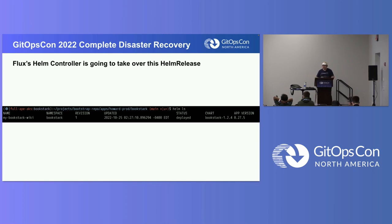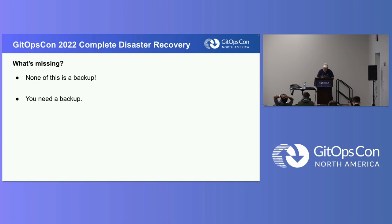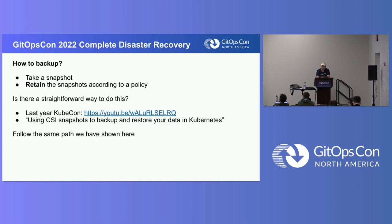Throughout the day you'll see Flux bootstrap — we're not going to do it here. It worked! There's our Bookstack wiki. We've restored it and it actually has all the data still on it. What's missing at this point? Actually, we still don't have a backup — that was the first thing we wanted to do. That could be a problem. But we're well prepared now for what comes next.